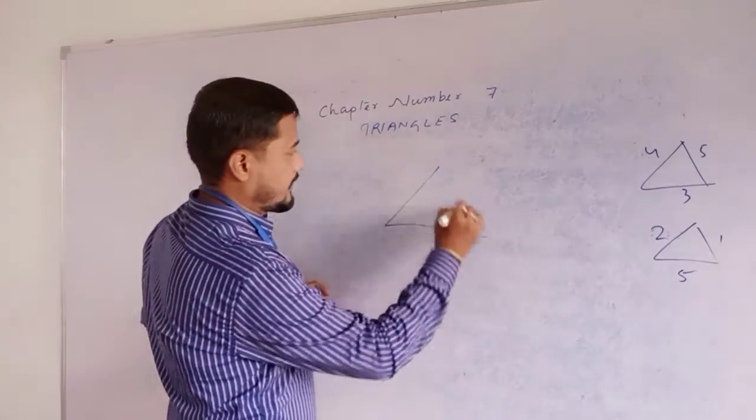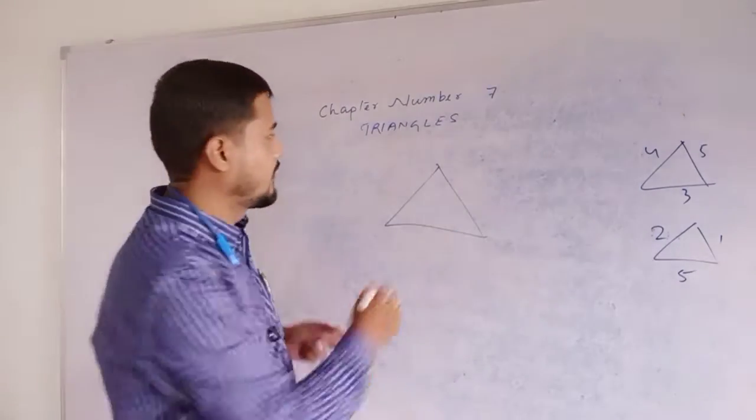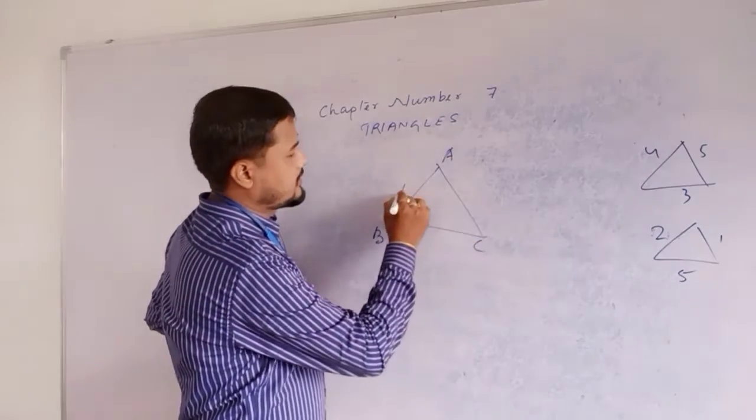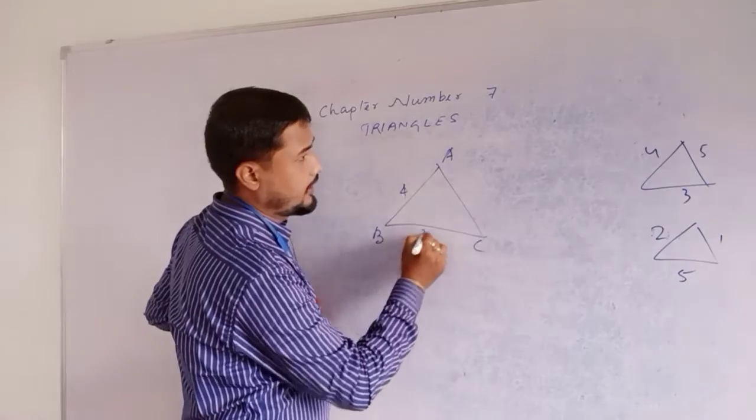Example, this is a triangle. This is A, this is B, and this is C. This is like 4, 3, and 5.